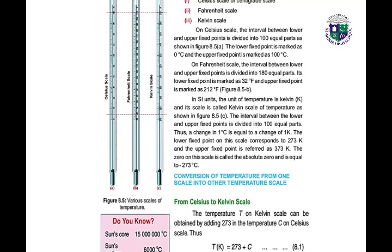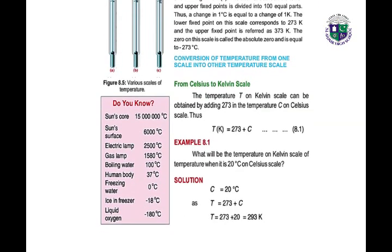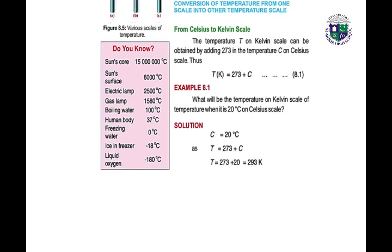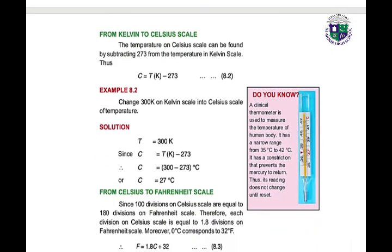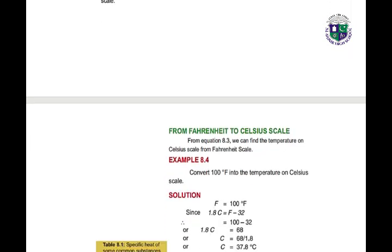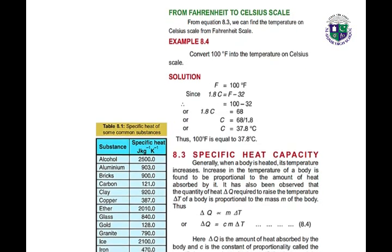The SI unit of temperature is the Kelvin, and its scale is called the Kelvin scale of temperature, as shown in figure 8.3. We can convert temperature from one scale to another. The temperature T on the Kelvin scale can be obtained by adding 273 to the temperature C on the Celsius scale. We also have the formula to convert from Fahrenheit to Celsius scale.